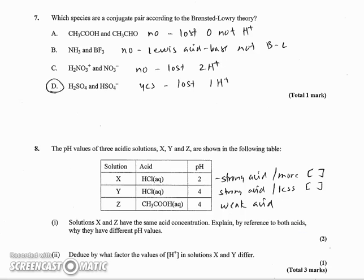Number seven wants to know which species are a conjugate pair according to the Bronsted Lowry theory. A, it appears to have lost an H, but really what it's done is it's reshuffled it and put the CHO differently, and what's been lost is an oxygen, not a hydrogen. NH3 and BF3 would make a Lewis acid-base pair, but not a Bronsted Lowry conjugate pair. H2NO3 lost 2H plus, so that doesn't qualify either, so only D qualifies because H2SO4 gives up one hydrogen forming HSO4, which would then be its conjugate base.